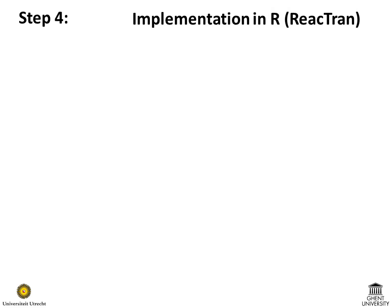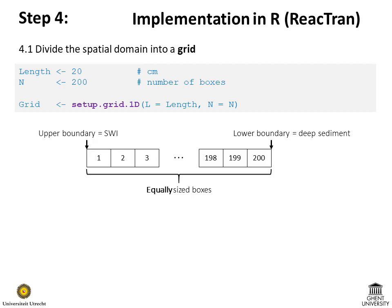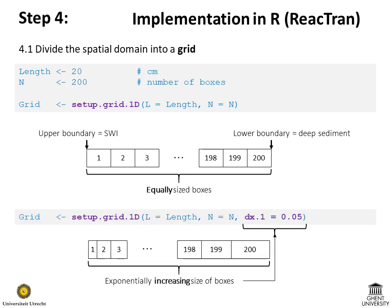Now we are ready to implement the model in R. First, we divide the spatial domain into a grid. The grid length is 20 cm and it comprises 200 boxes. The grid is a central variable in the model — it describes all relevant locations in the spatial domain, including centers of the boxes as well as their interfaces. The grid can comprise equally sized boxes, but if we expect steep gradients close to the upper boundary, it is better to define a grid with an exponentially increasing size of the boxes.